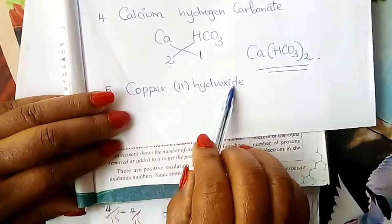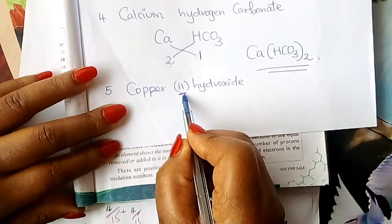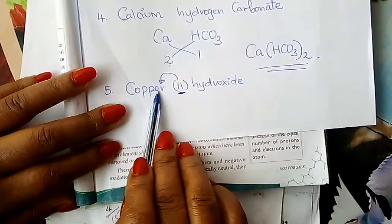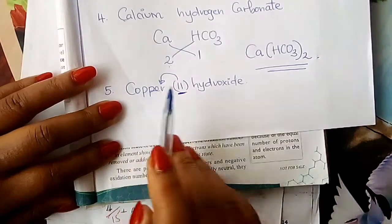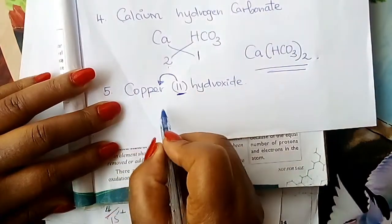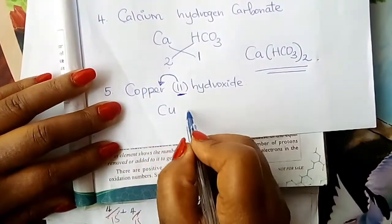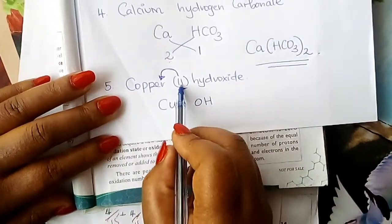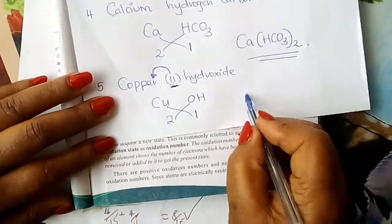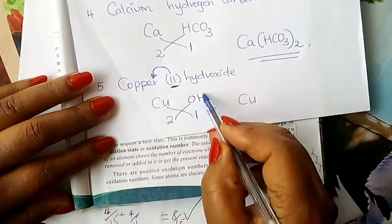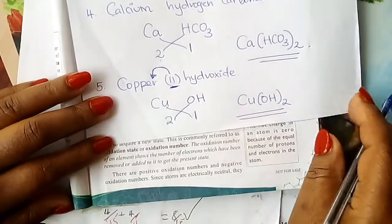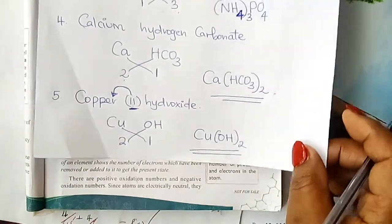Copper(II) hydroxide: the Roman numeral two in brackets refers to the valency of the element that comes before it, so the valency of copper is two. Copper's symbol is Cu; hydroxide is OH. Valency for copper is two; hydroxide is one. Interchange: copper takes one — you don't need to write the one. Hydroxide is a radical taking two, so fix it in brackets. The formula is Cu(OH)2.